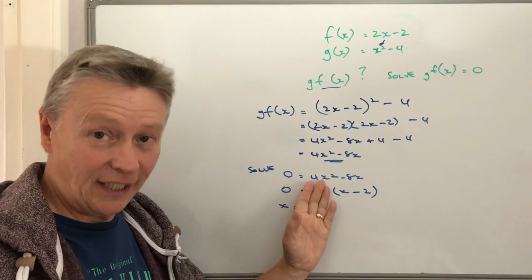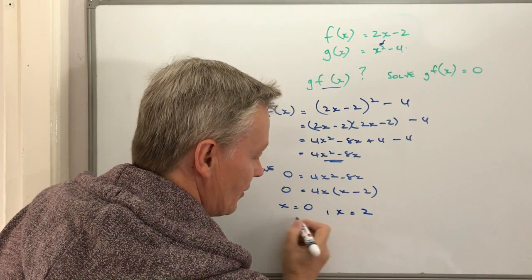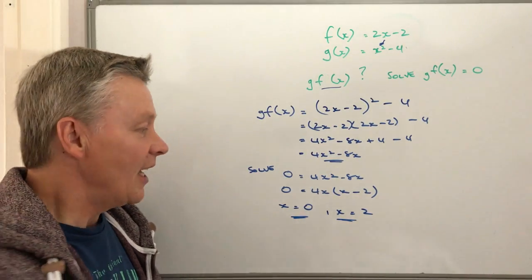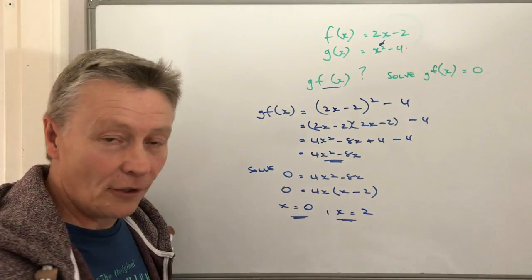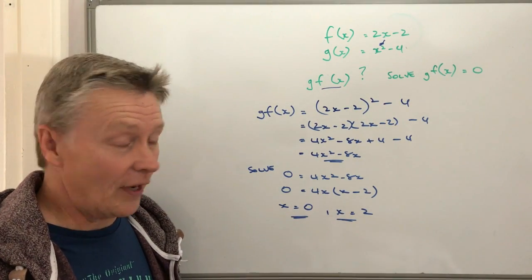And then x minus 2 equals 0, so therefore x must equal positive 2, and that will solve this particular equation. If you're not sure about how to solve that, there are playlists on factorization and working through getting values of x.